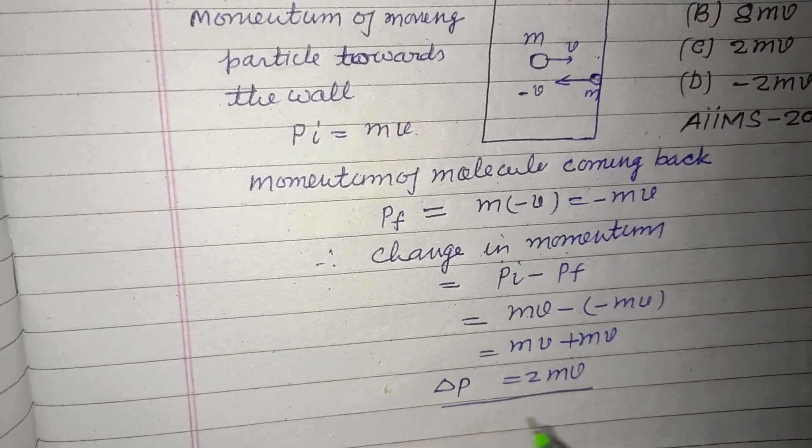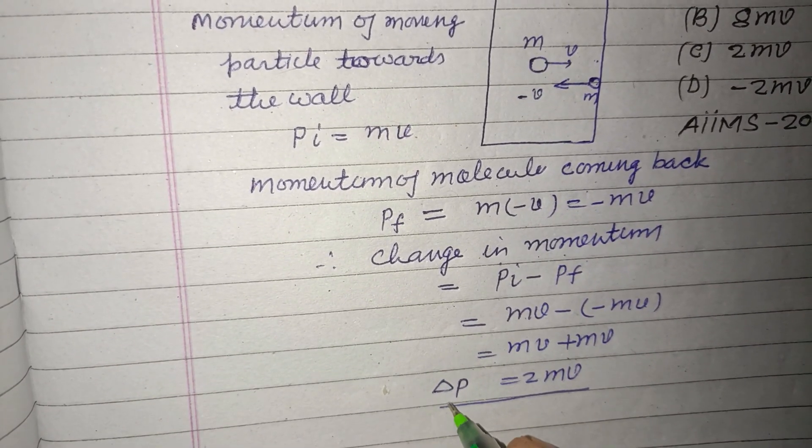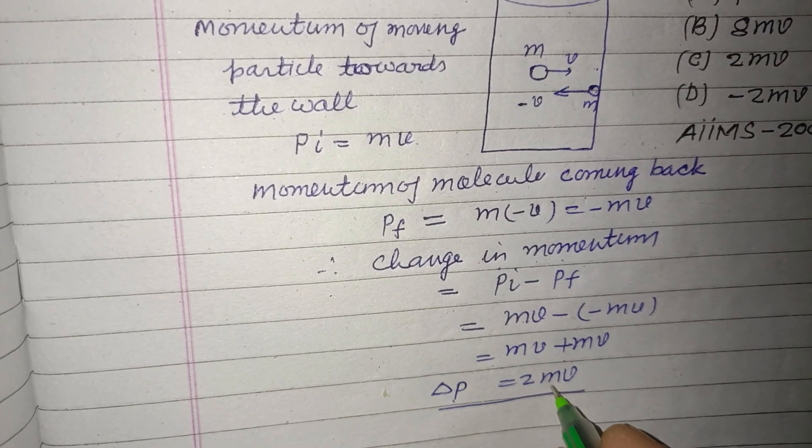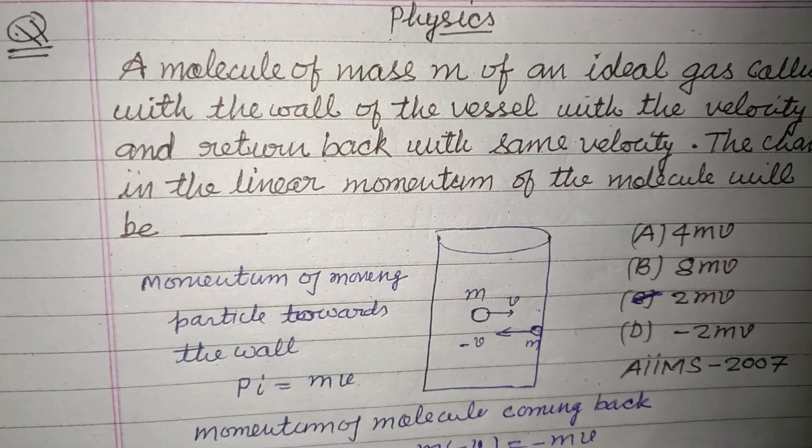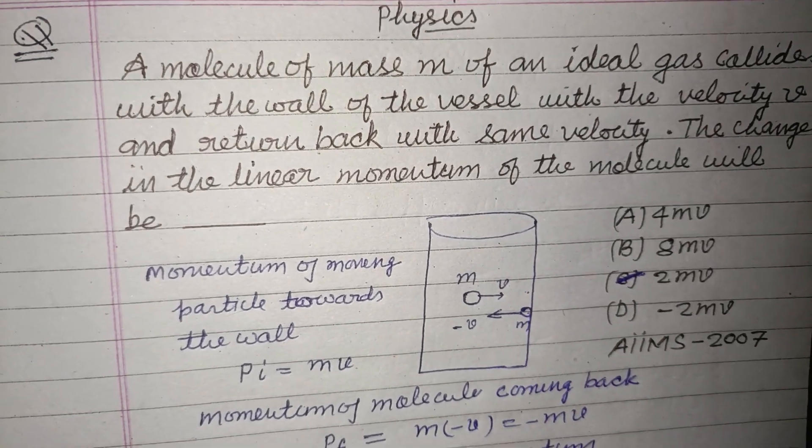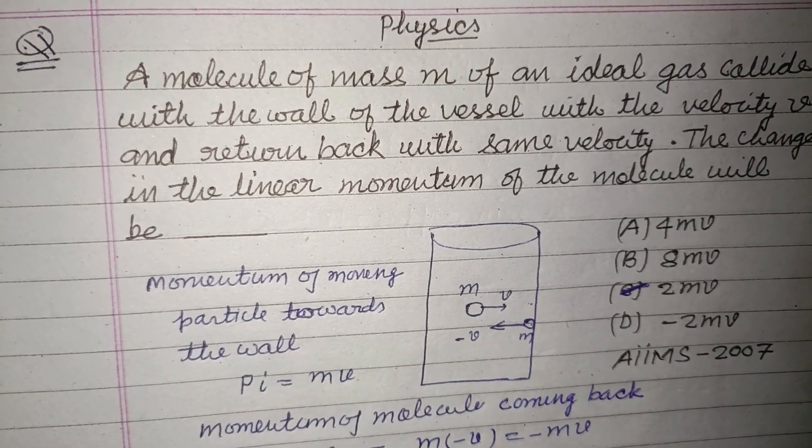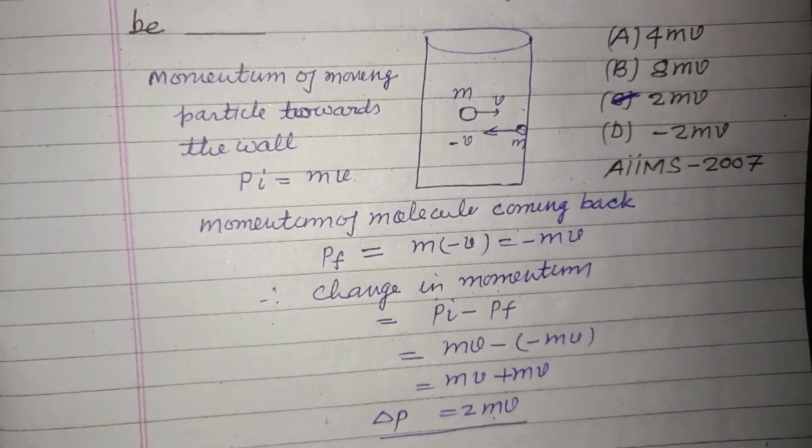If impulse is also asked, then it will be equal to del P, so the same answer, 2mv. So answer C is correct in this question. I hope you got it. Please like the video, subscribe to the channel. Thanks for watching.